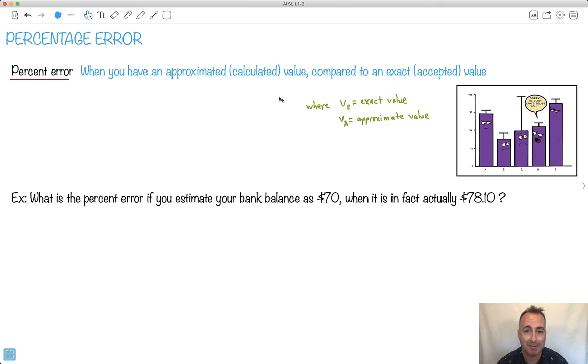Here we go, percentage error. This is when you have an approximated value, something you've actually calculated, and you want to see how close it is to something that's exact or accepted.